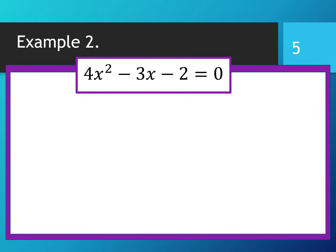The second example. We will find the solution for the quadratic equation 4x² - 3x - 2 = 0. The first step is to find the coefficients: a = 4, b = -3, and c = -2. Now we find the discriminant.